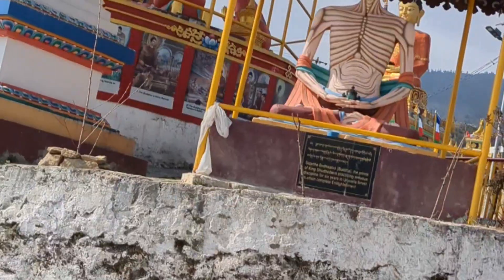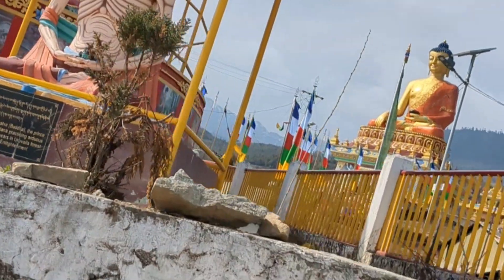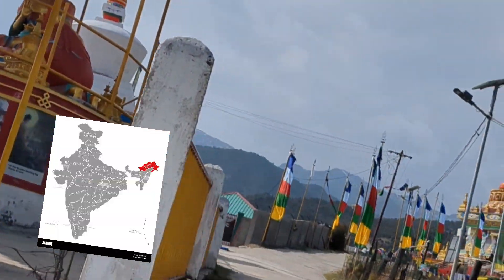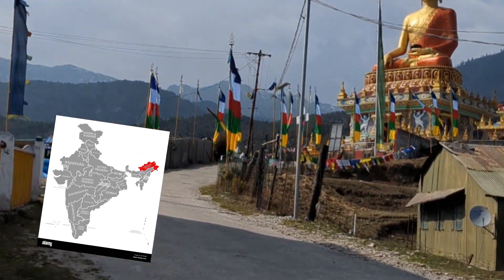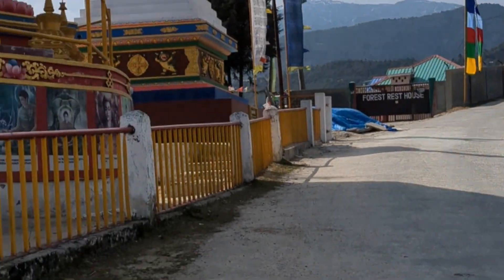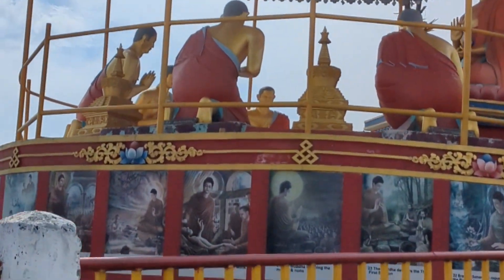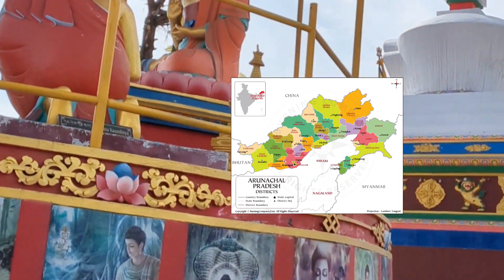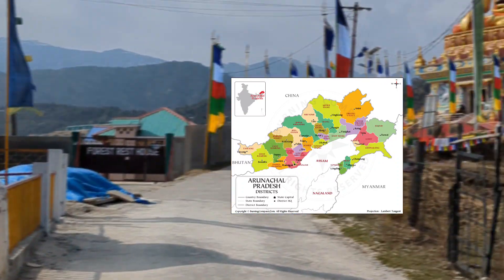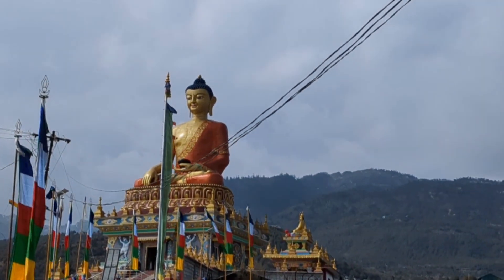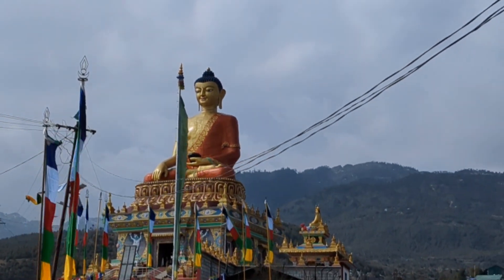For those who don't know where Tawang or Arunachal is, I have provided the India map — the red-colored one is Arunachal Pradesh. I have also given the map of Arunachal Pradesh, which will make it easier for you to find out where Itanagar is and where Tawang is.